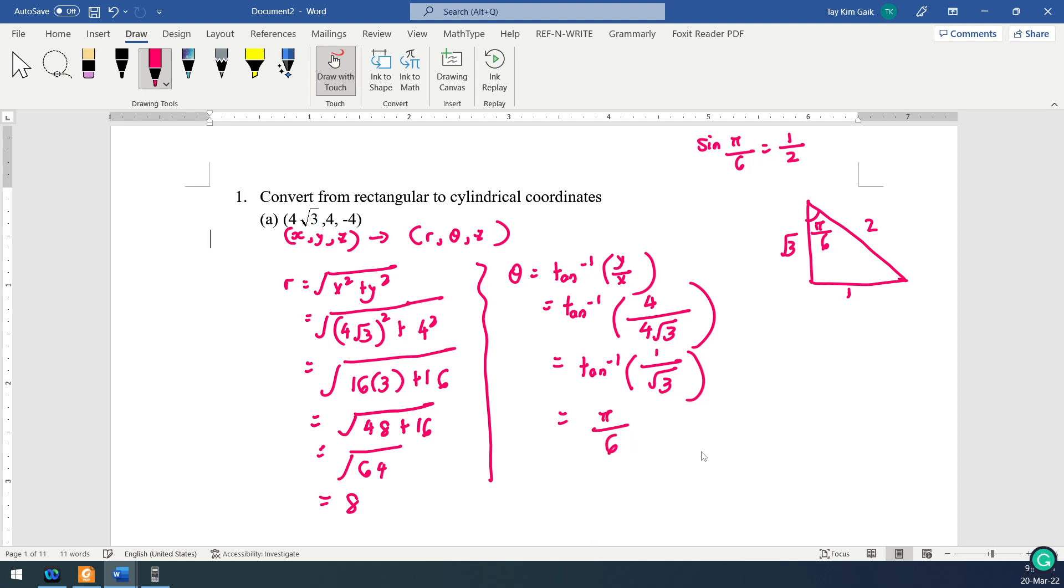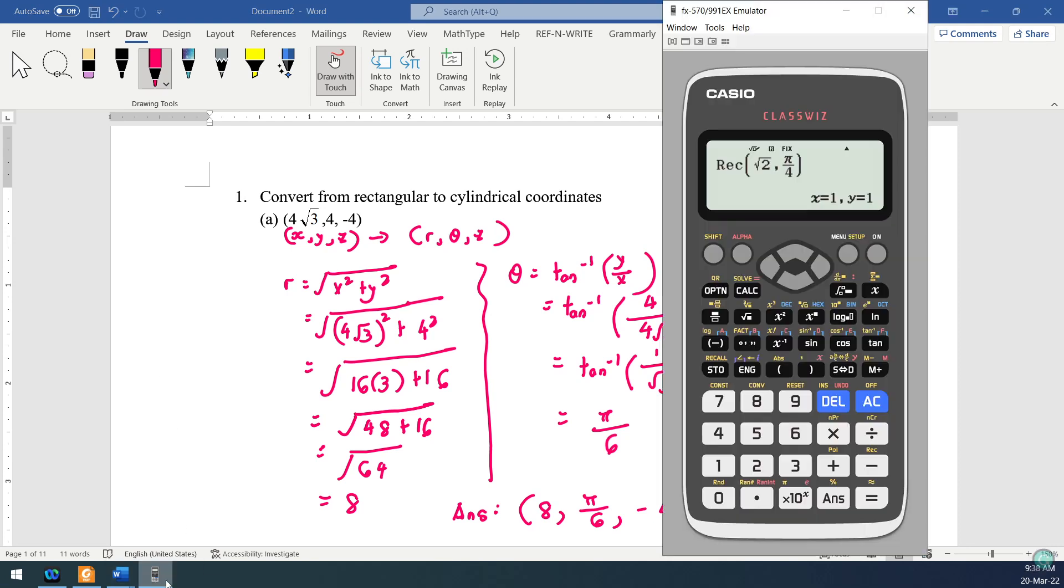That's why your answer exactly. R is 8, theta is pi over 6, z maintained, which is negative 4. 3D you cannot, but z maintained. That's why it looks like you want to find a polar.